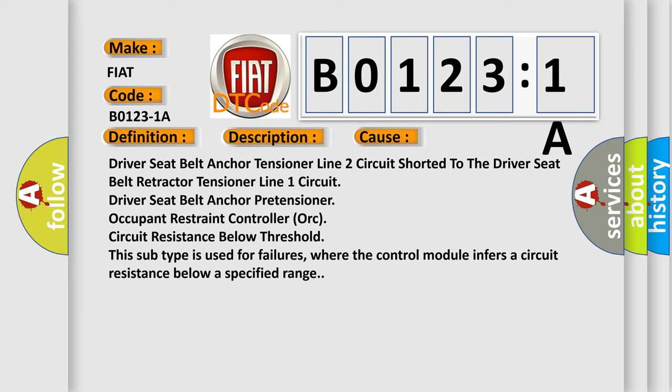Driver seat belt anchor tensioner line 2 circuit shorted to the driver seat belt retractor tensioner line 1 circuit. Driver seat belt anchor pretensioner, occupant restraint controller ORC circuit resistance below threshold. This subtype is used for failures where the control module infers a circuit resistance below a specified range.